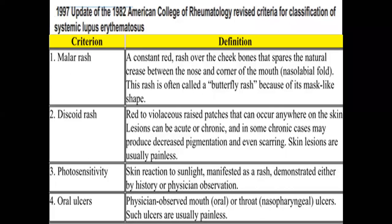Discoid rash, by contrast, does not respect the nasolabial folds or natural creases. It consists of red to violaceous raised patches that can occur anywhere on the skin, not only in the butterfly area. These lesions can be acute (disappearing after a while) or chronic (remaining for a long time). In chronic cases, they can cause pigmentation, scarring, and hair loss in affected areas.